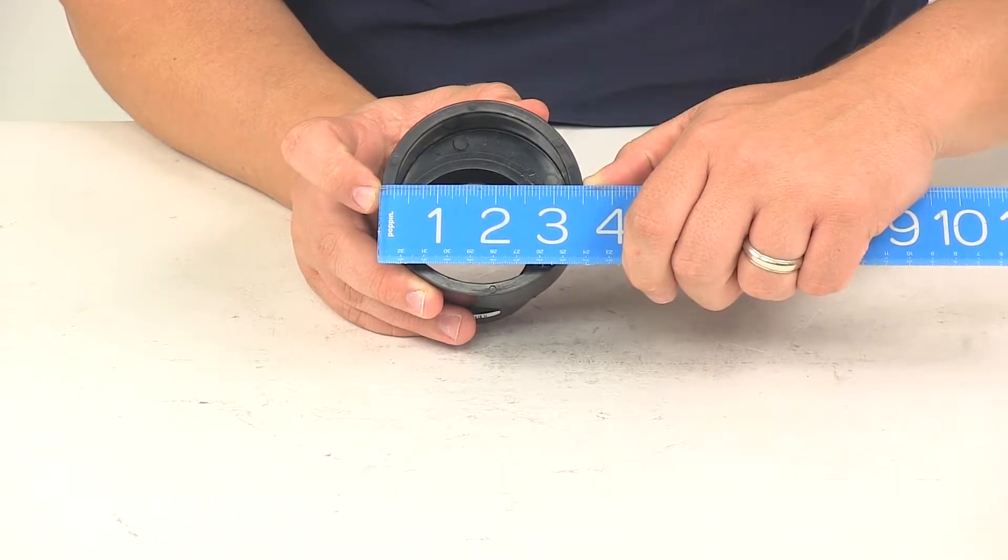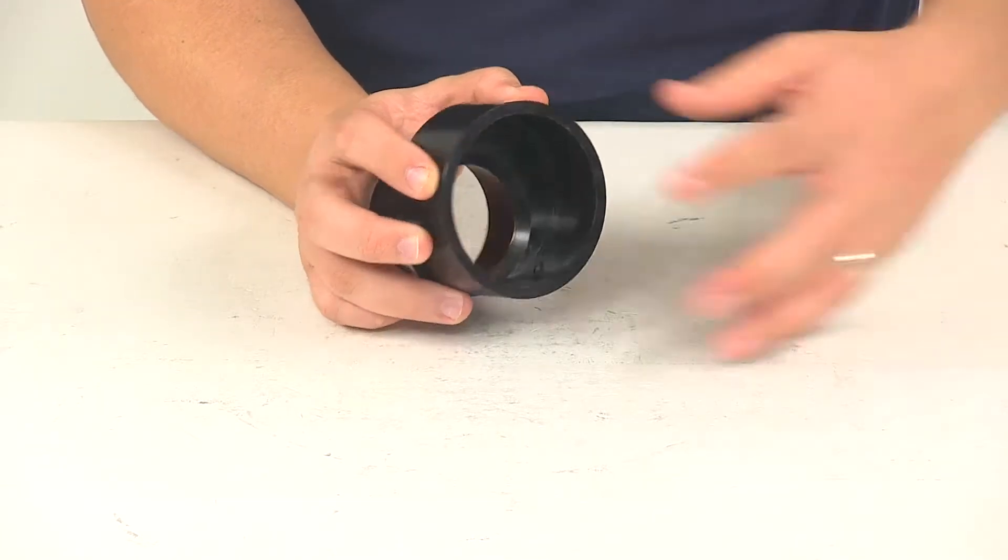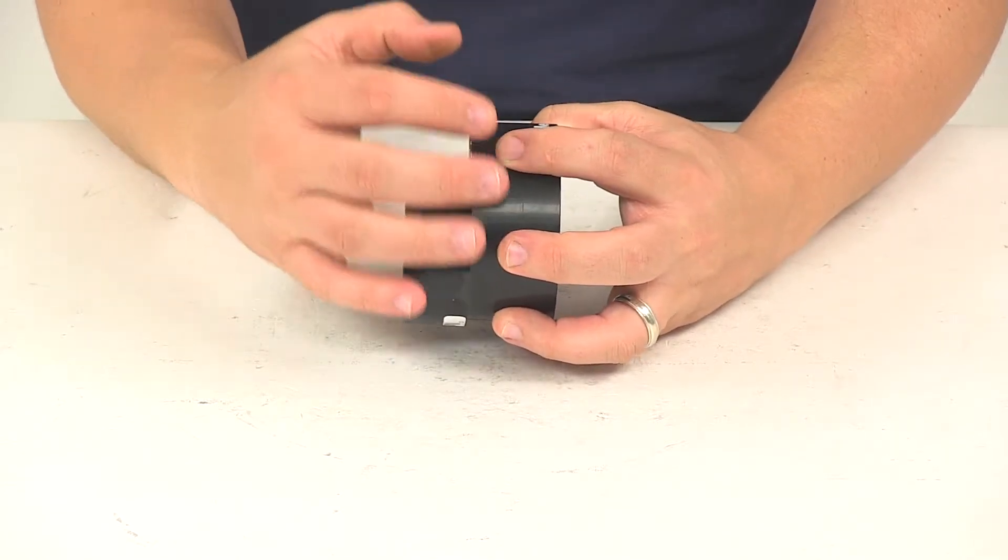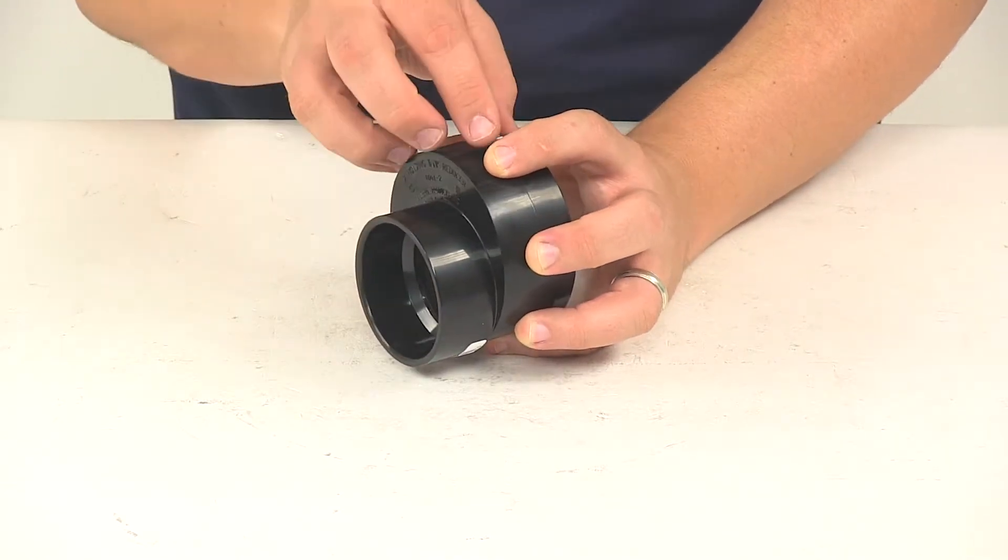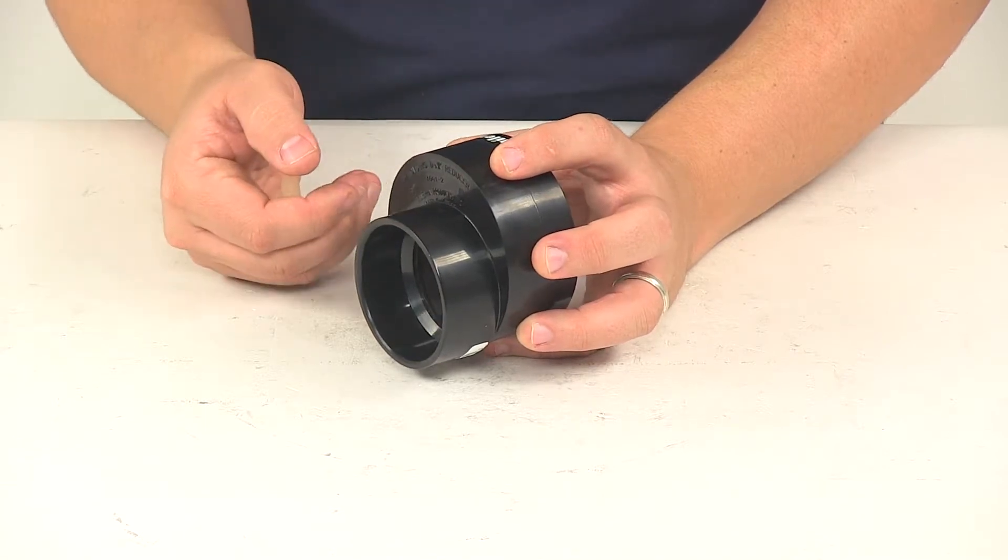The outer diameter is three and a half inches. This is the male end, so it slides into the opening, and you'll need to use the appropriate glue to get it fully installed and secure.